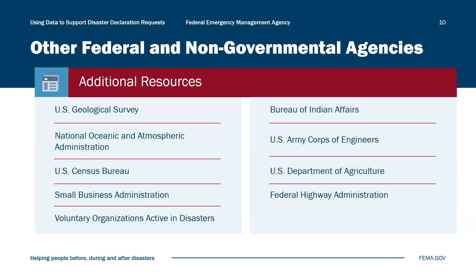Census.gov can provide important information about demographics, income levels, and other features of impacted communities that can support the disaster declaration request. The Small Business Administration, Bureau of Labor Statistics, and the Census Bureau can provide information about economic data such as employment, businesses, and more. Other federal agencies such as the Bureau of Indian Affairs, U.S. Army Corps of Engineers, U.S. Department of Agriculture, and the Federal Highway Administration can provide important demographic, infrastructure, and labor reports that are updated regularly. Additionally, organizations such as voluntary organizations active in disaster, or VOADs, track community needs and may offer insights into volunteer agency activities.